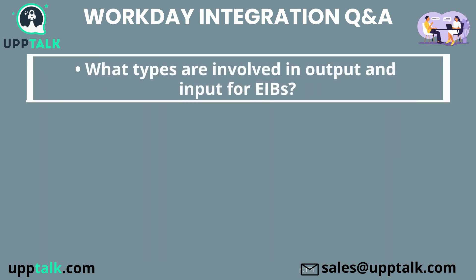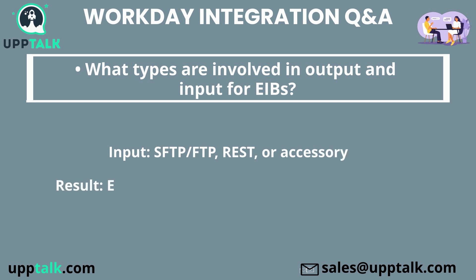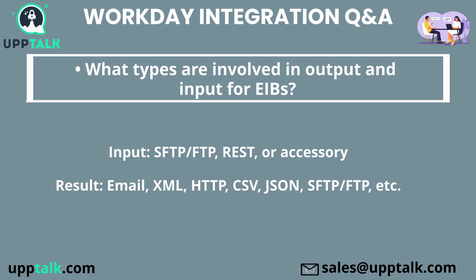What types are involved in output and input for EIBs? Input: SFTP, FTP, REST, or attachment. Output: email, XML, HTTP, CSV, JSON, SFTP, FTP, etc.